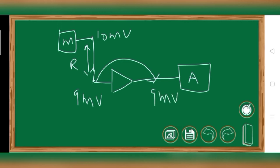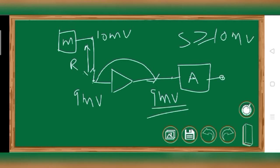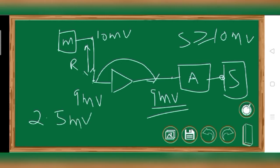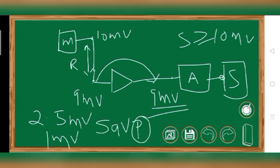This buffer amplifier passes the 9mV signal, so you get 9mV at the input of the amplifier. Although the amplifier is designed for signals greater than or equal to 10mV, it can still amplify the 9mV signal fairly well and feed it to the speaker. So earlier you were losing 2.5mV of signal, but now you are only losing 1mV, which means you are saving power. That's why we use this buffer amplifier.